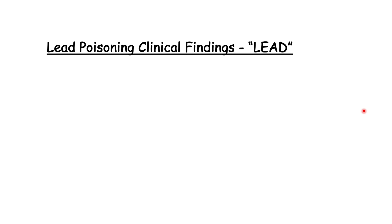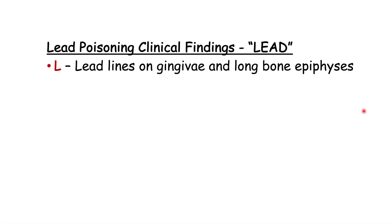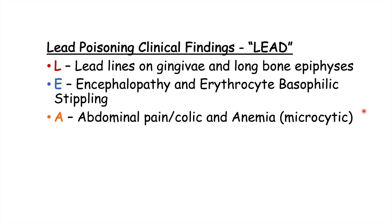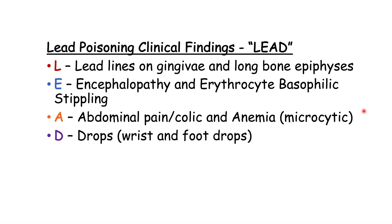A useful mnemonic for remembering the clinical findings of lead poisoning is LEAD. L stands for lead lines on the gingiva and long bone epiphyses. E is for encephalopathy and erythrocyte basophilic stippling. A is for abdominal pain or colic and anemia — specifically a microcytic anemia. D is for drops — wrist drop from radial neuropathy, and foot drop can also occur.